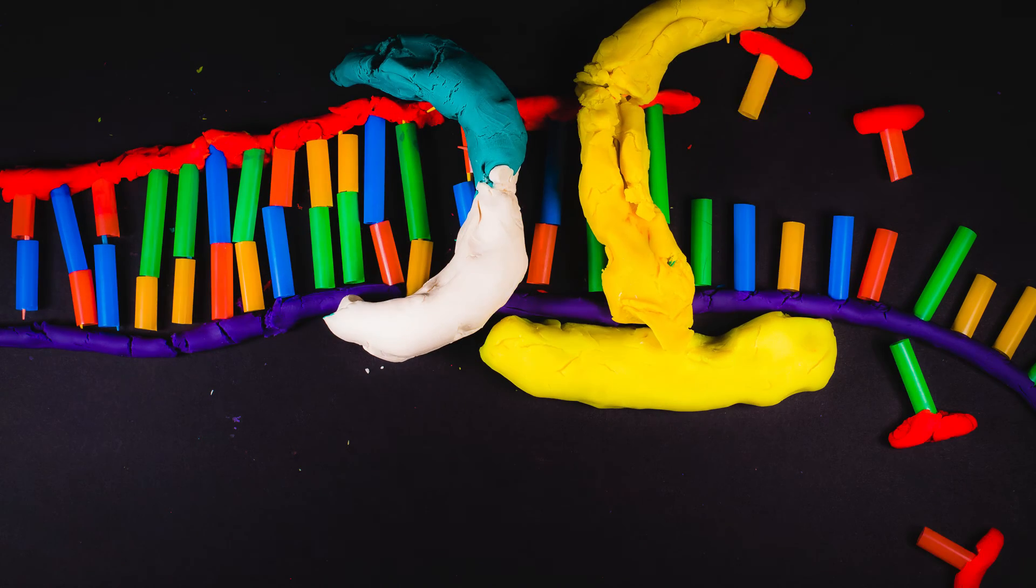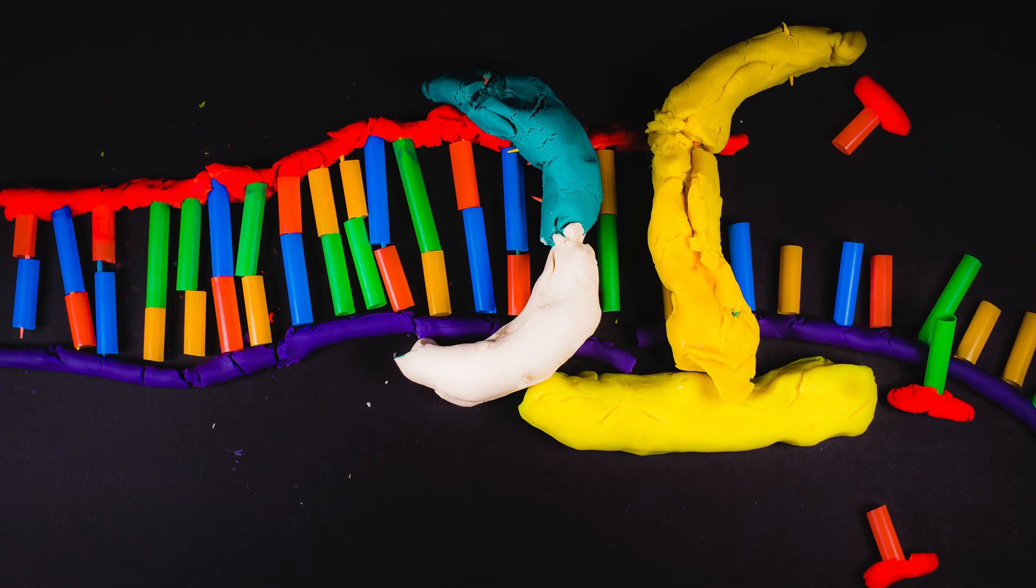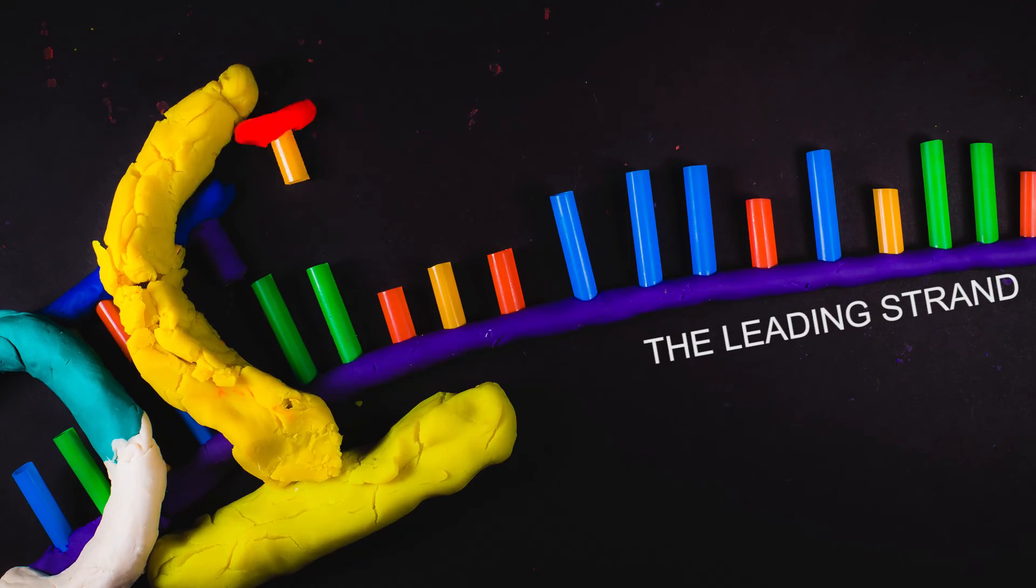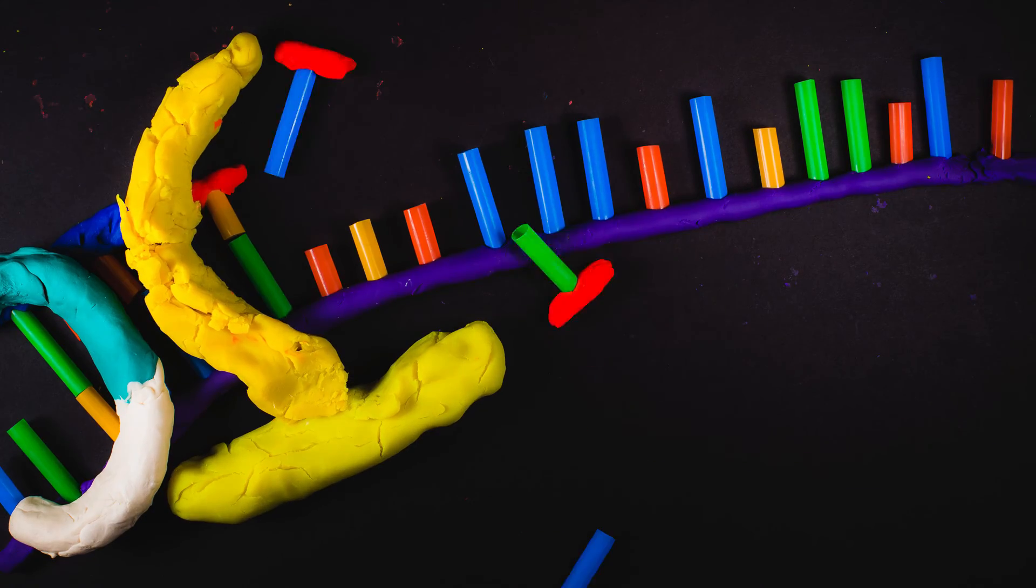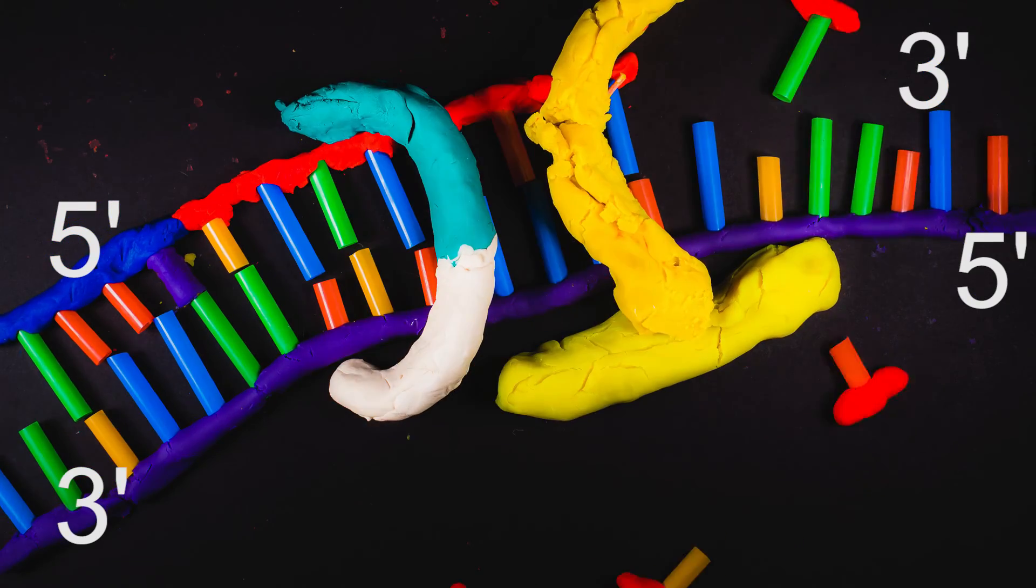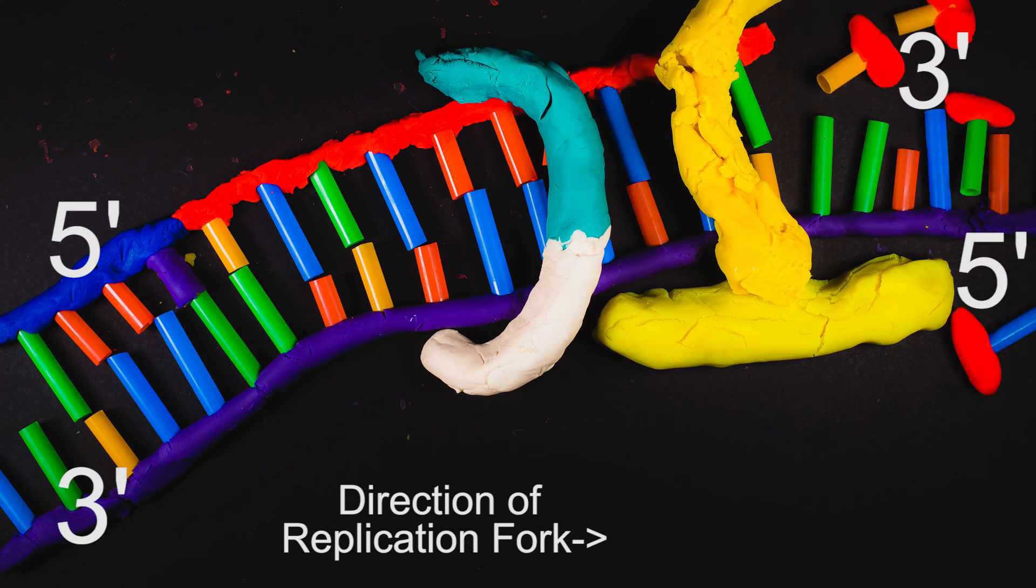These concepts of rate and processivity differ between different polymerases. To further understand this, we will now look at the lagging strand. As stated earlier, polymerases can only synthesize DNA in the 5 to 3' direction. Because of the orientation of the leading strand, POL3 can move along the chromosome in the same direction as the replication fork.